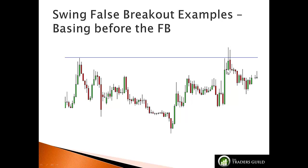So strong buying, sideways consolidation, the pause, the test, material FB, rejection — we have another test but it doesn't cause a new higher high, so the FB is still valid — and move down.